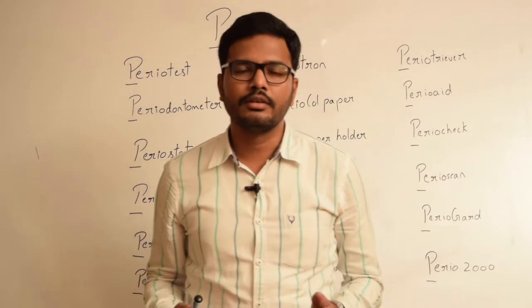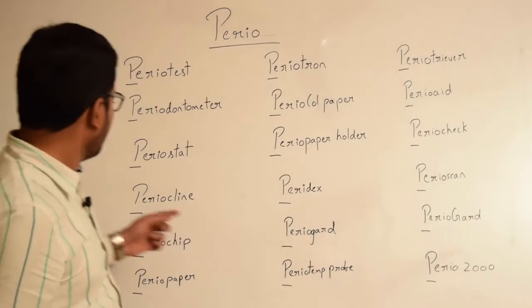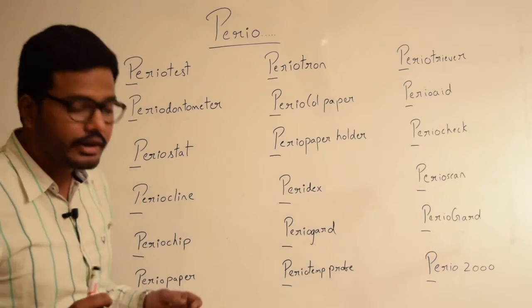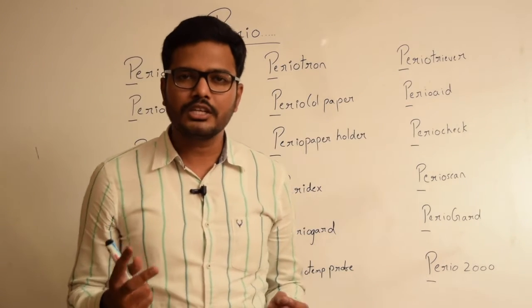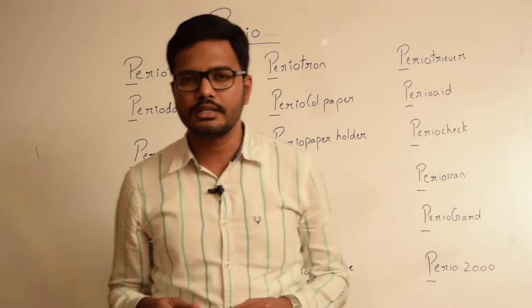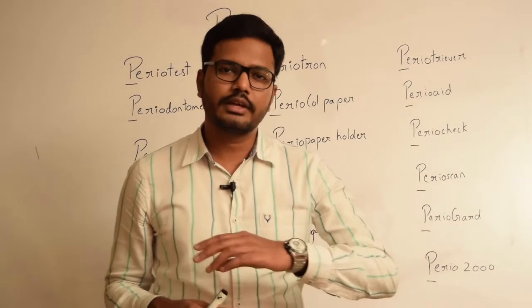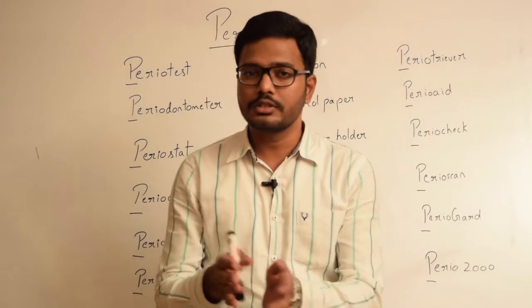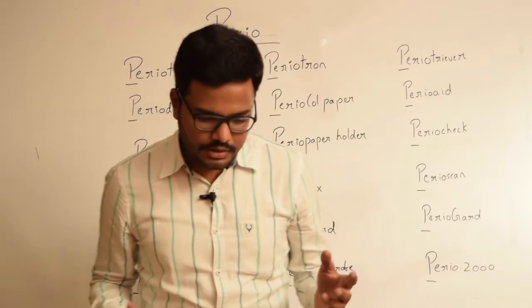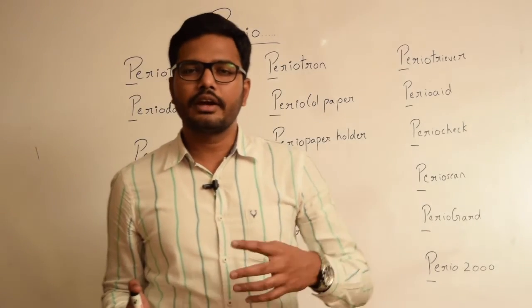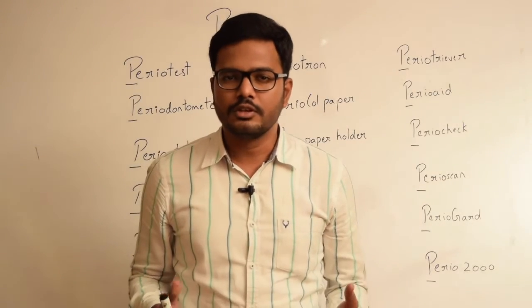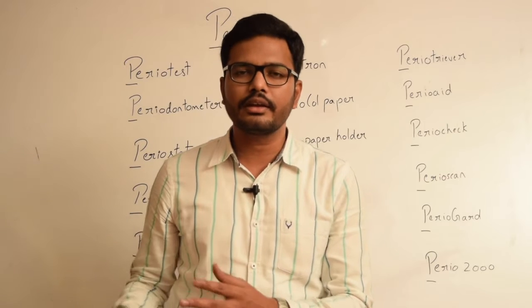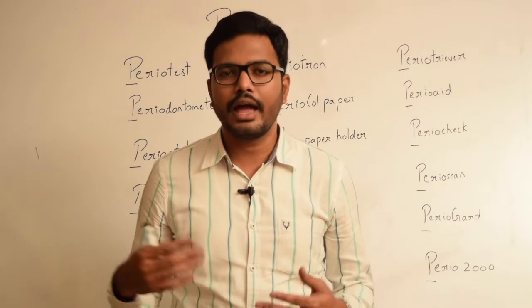Now periocline. Periocline is a 2% minocycline formulation used in local drug delivery. When this formulation is injected into the gingival sulcus, there is gradual release of the active ingredient over a period of time. There is also sustainability because minocycline has a greater affinity for the tooth surface, so there is sustained release of this active ingredient resulting in localized antibiotic activity.